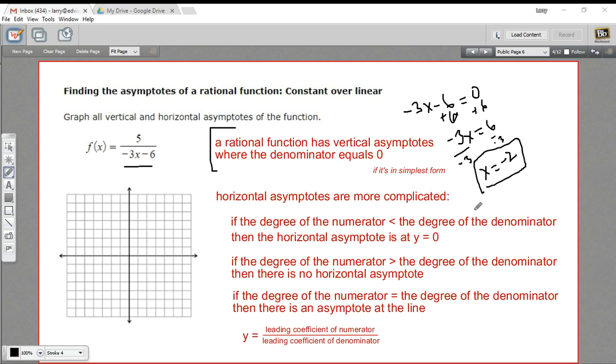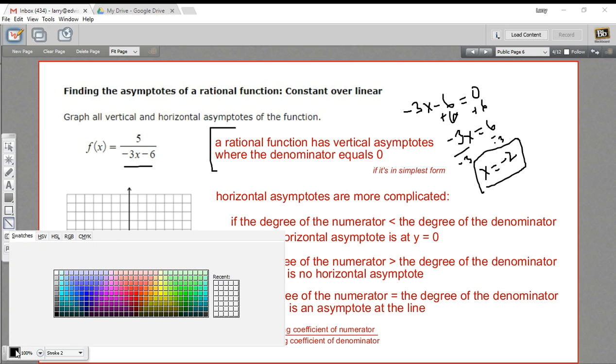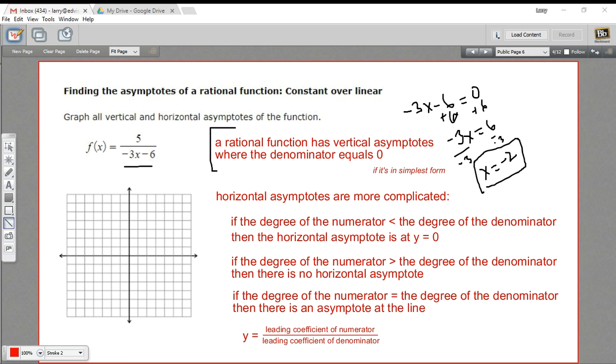This is the equation for a line, x equals negative 2, and usually you draw this as a dashed line. I'm just going to draw it as a red line at x equals 2. So that is our vertical asymptote.